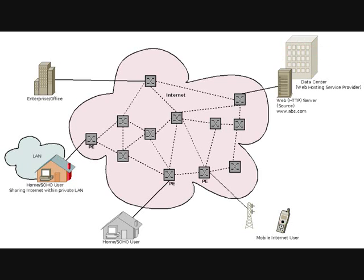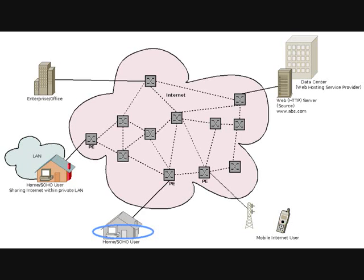Here is a typical setup where you have a data center in which you have a web server hosted, and assume this website is abc.com. On the other side you can see various internet subscribers: a SOHO or home-based user with a private LAN sharing internet services, a home user with a dedicated internet link, an enterprise or office subscribed to internet services, and a mobile user getting connectivity to the internet.